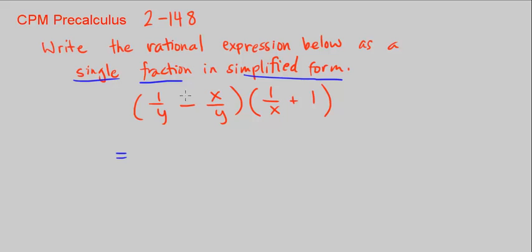What I'm going to do is first combine - we have a common denominator here. So I'm going to combine the numerator, it's just (1 - x)/y, times 1/x, and I'm going to write 1 as 1/1. Same thing, right?